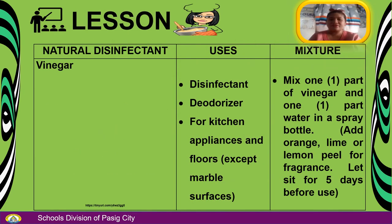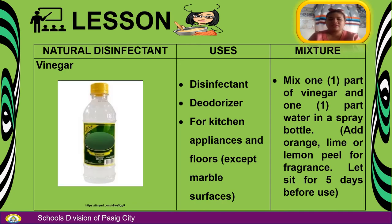Let's identify the different natural disinfectants, their uses, and mixtures. First, vinegar — uses include disinfectant and deodorizer for kitchen appliances and floors, except for marble surfaces. For the mixture, mix one part of vinegar and one part of water in a spray bottle. You can add orange, lime, or lemon peel for fragrance. Let it sit for 5 days before use.